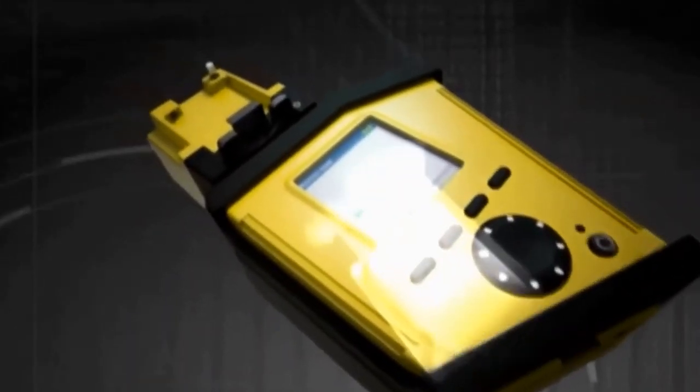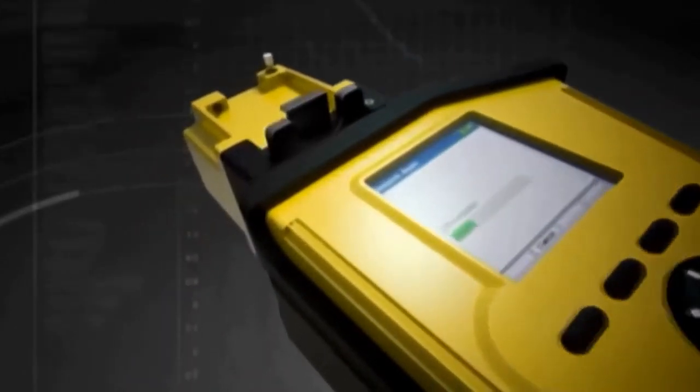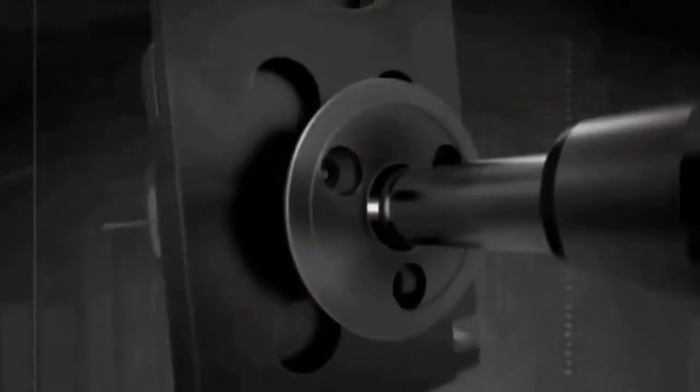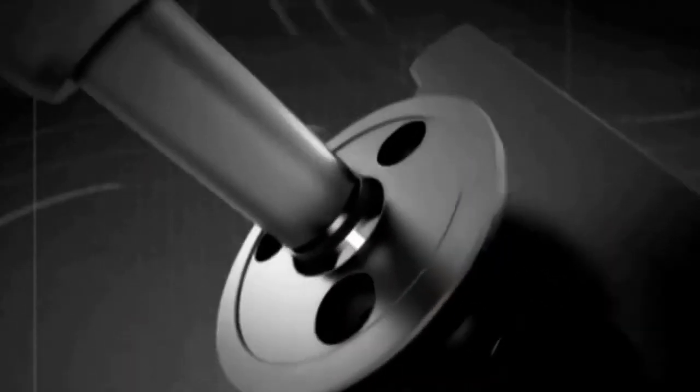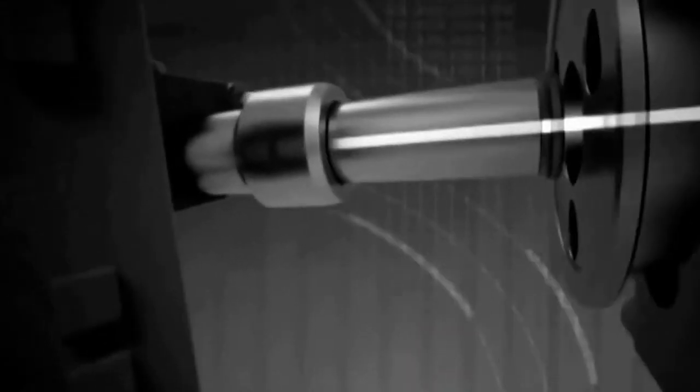When the operator initiates the analysis, infrared light beams are focused on the fluid. Light at some infrared frequencies will pass through the fluid, while at other frequencies the light will be partially or totally absorbed. The light that passes through the sample goes to the spectrometer.